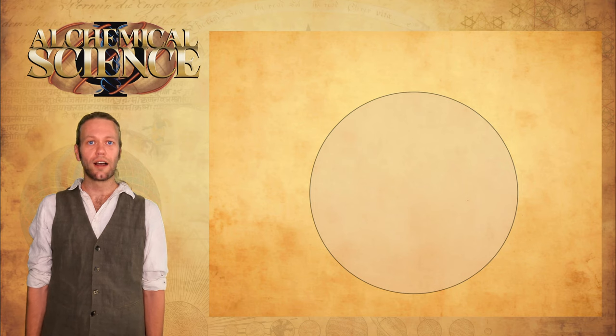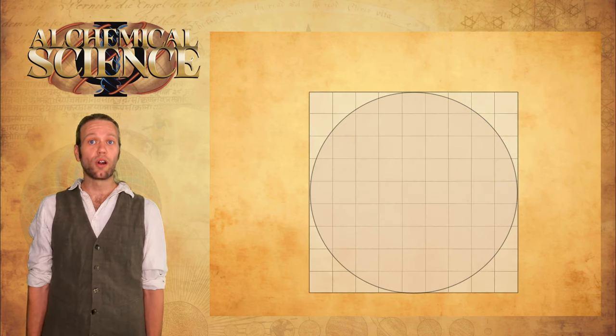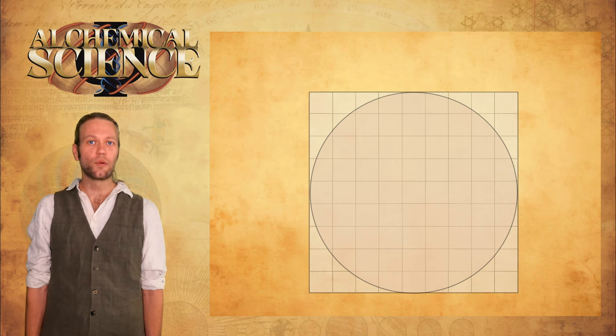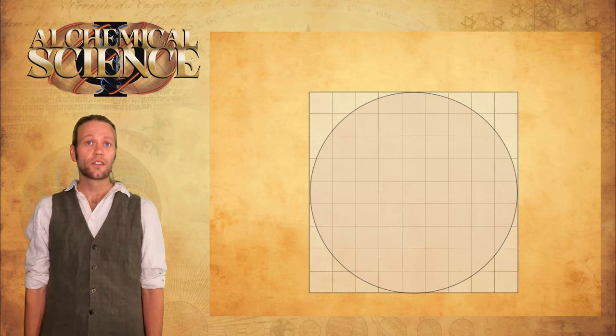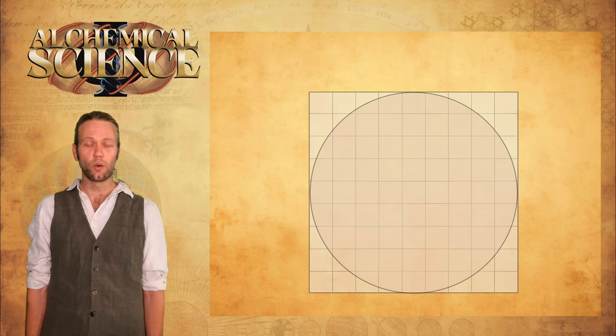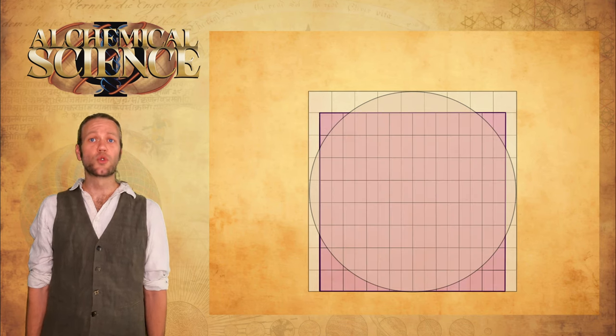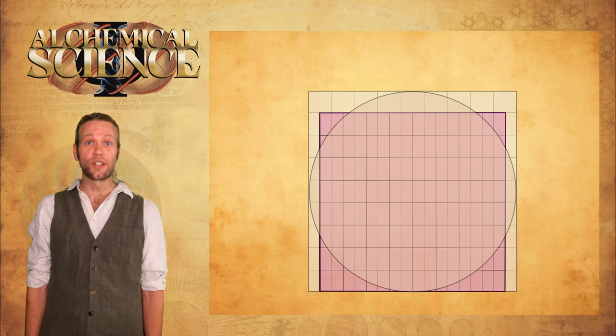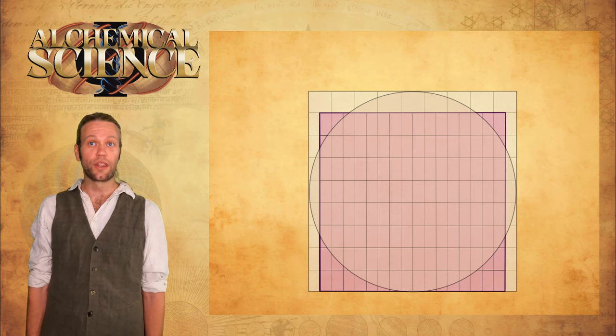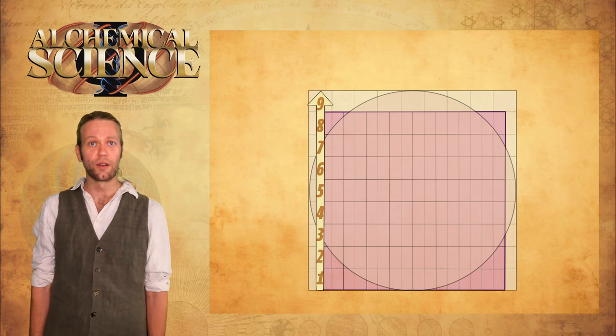First we draw a circle, any circle, just any size. We divide the diameter of the circle into 9 equal units, so that we now have a 9 by 9 grid. To find the approximate area of the circle by squaring it, we simply need to draw in an 8 by 8 grid square, having equal units with the 9 by 9 grid square, as shown here.